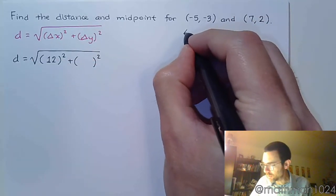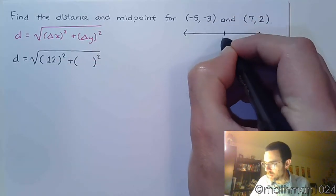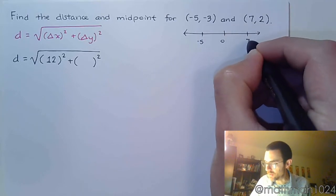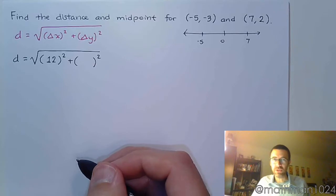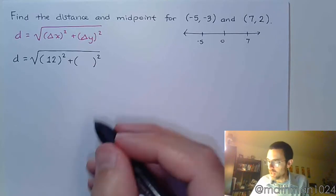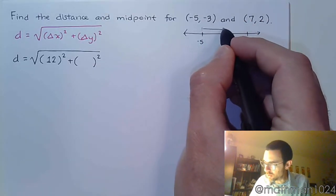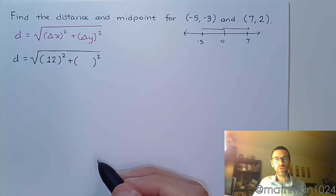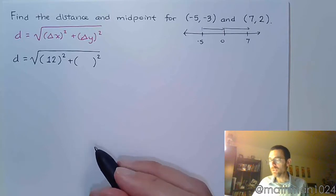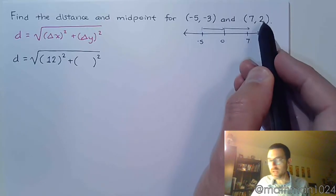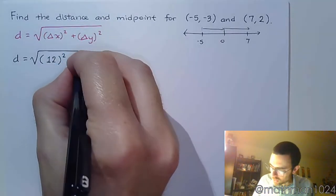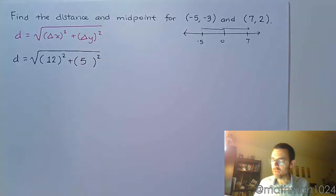Here's 0, here's negative 5, and here's 7. How far apart are they? Don't say 2 units — they're not 2 units away. You've got 5 units from here to here, and another 7 units to get there, so it's a total of 12 units apart. Similarly, the difference between negative 3 and 2 is 5 units apart.